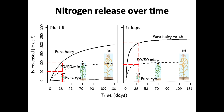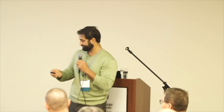In a no-till application, the behavior is quite different — we get better synchrony between nitrogen release and crop uptake. The pure legume sitting on the surface is in an inhospitable environment: it gets wet in the morning and dries out in the afternoon, and fungi don't thrive under those variable conditions. So decomposition is slower, and the release pattern is more gradual. In no-till, all cover crop types release nutrients more slowly and with better synchrony to crop uptake.